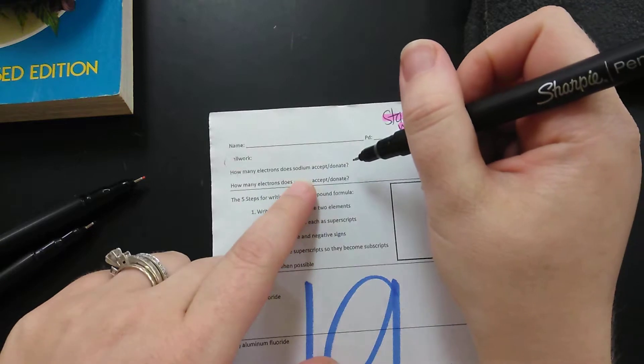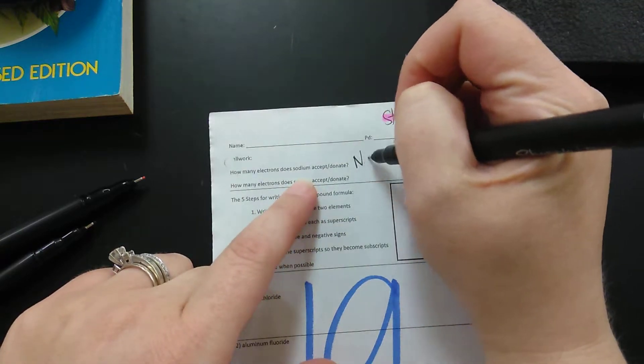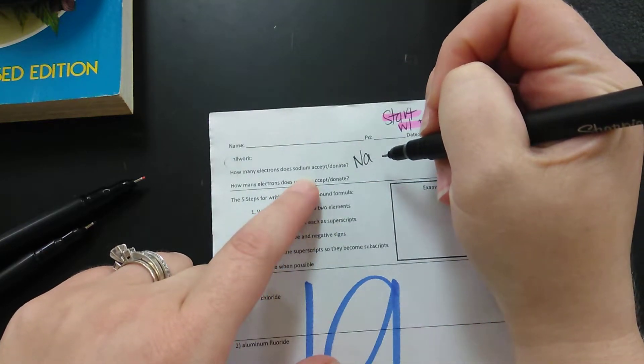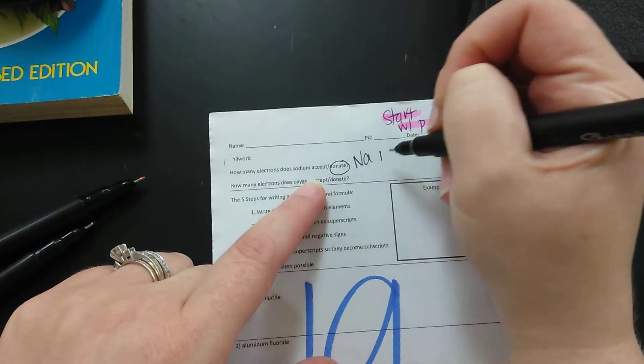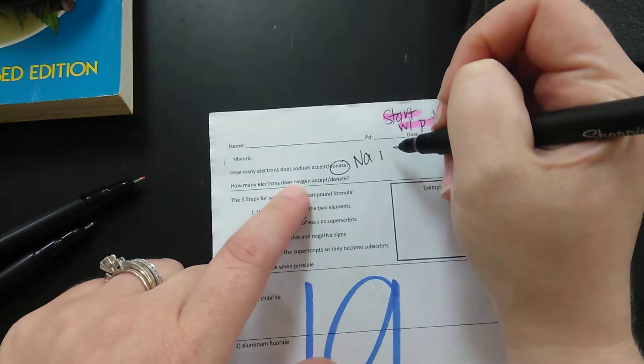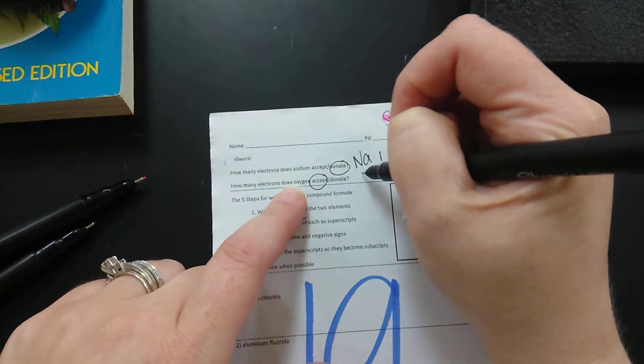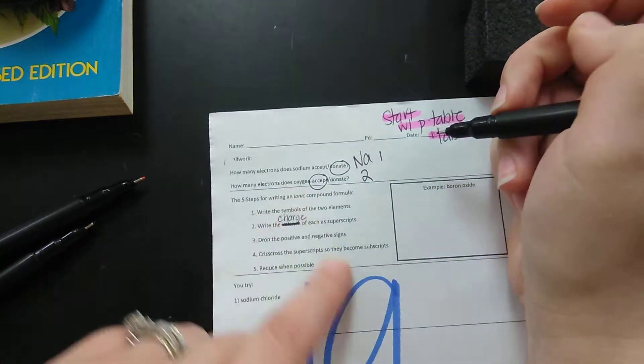So how many electrons does sodium? Sodium is Na. So ideally if you're looking at your periodic table, sodium is in group one so it will donate its one electron. Oxygen is in group six so it will accept two more electrons and that should be on your periodic table.